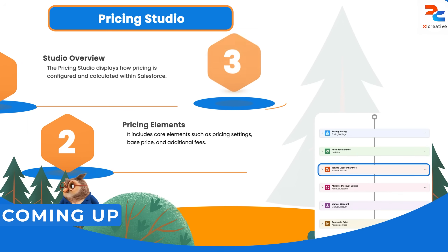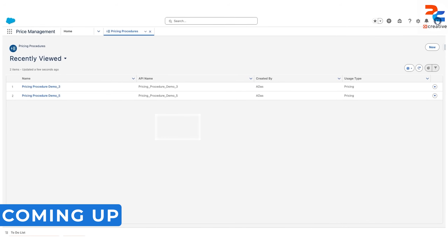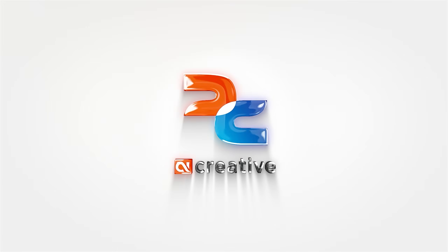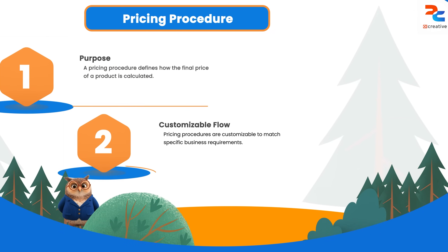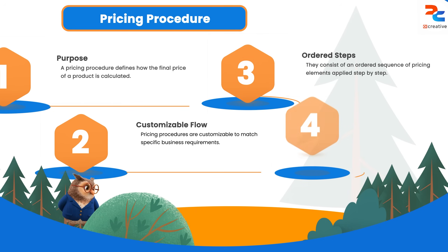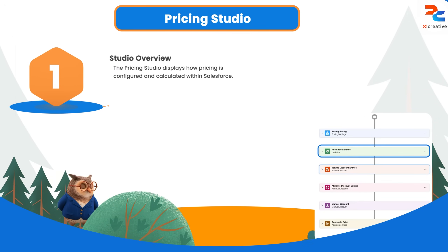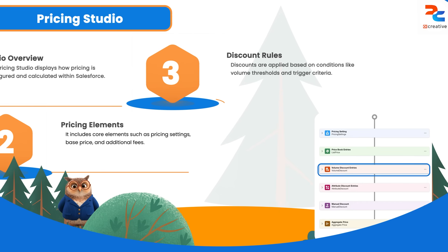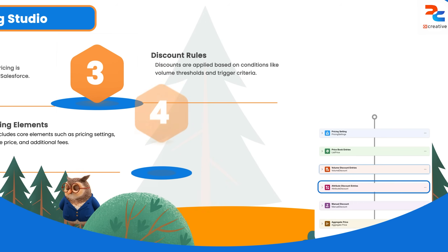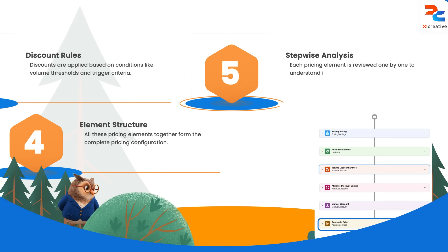These are the elements defined in the Salesforce pricing procedure. A pricing procedure contains elements like the pricing settings, the list price, the price book, and various discounts — based on volume, attribute, and manual input. We'll go through each one by one.